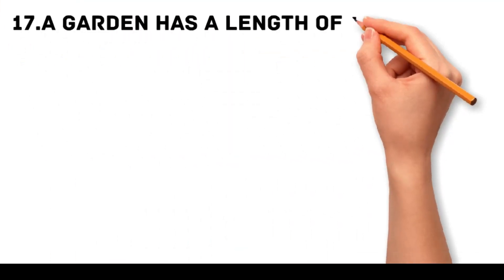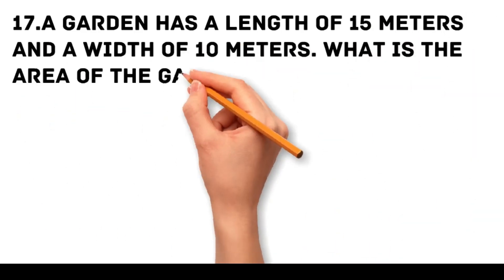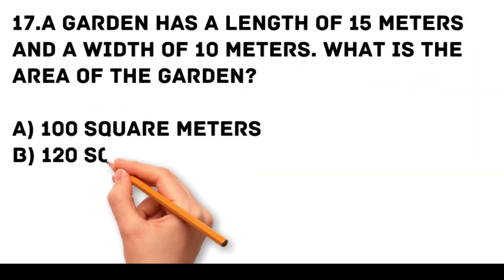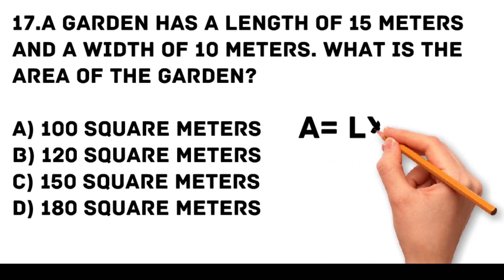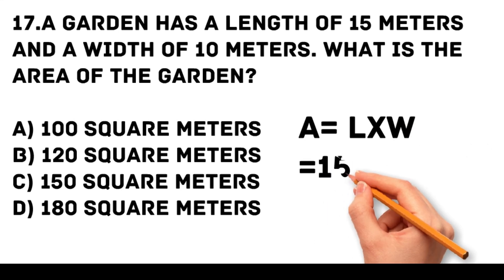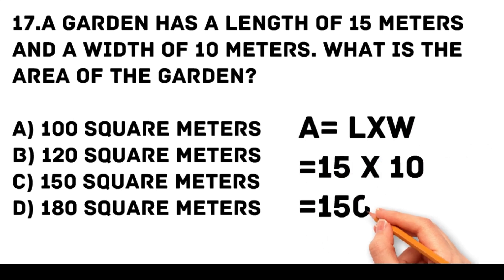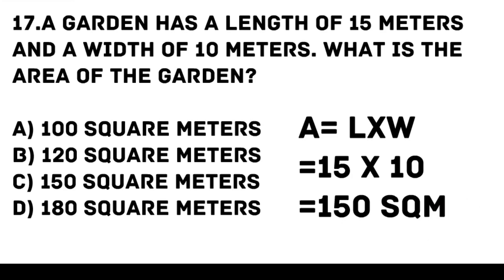Question 17. A garden has a length of 15 meters and a width of 10 meters. What is the area of the garden? A. 100 square meters. B. 120 square meters. C. 150 square meters. D. 180 square meters. Answer: C. 150 square meters. Area of a rectangle is length times width. 15 times 10 is equal to 150 square meters.